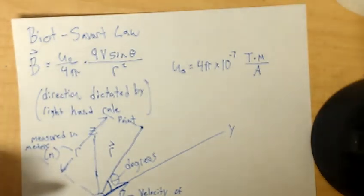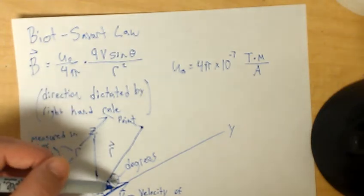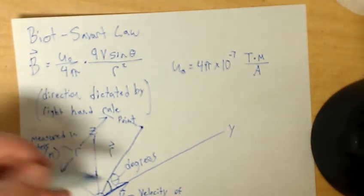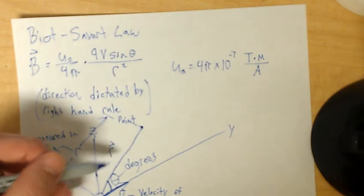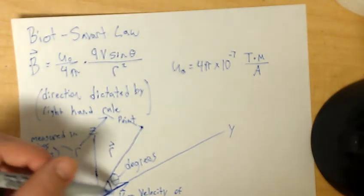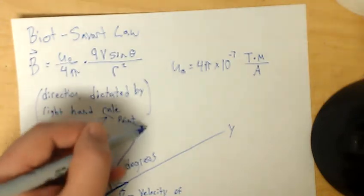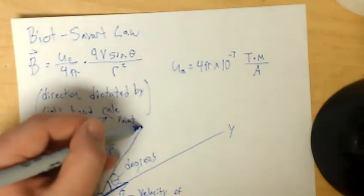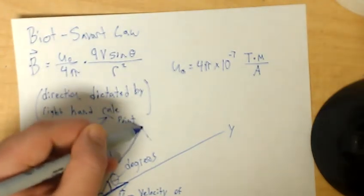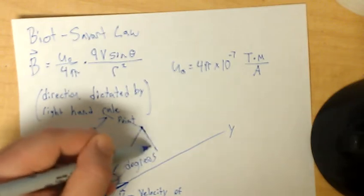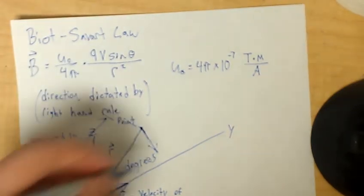It's always going to be orthogonal, or perpendicular to the plane that the velocity vector and the R vector create. So, in this case, it'd look something like that. That's our B vector.